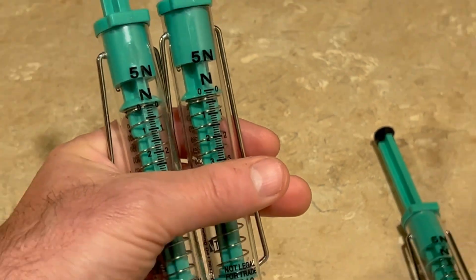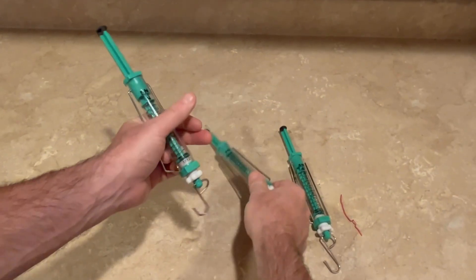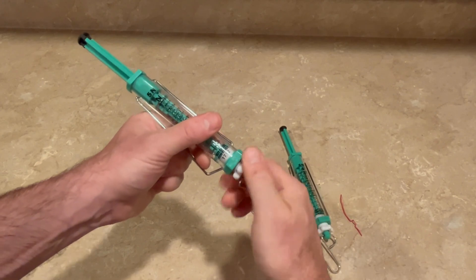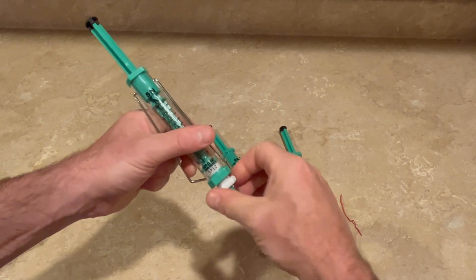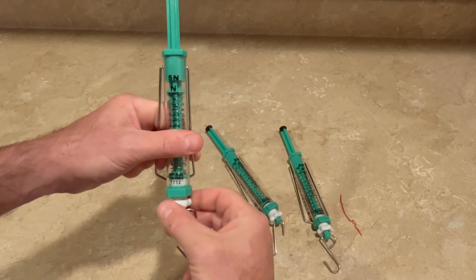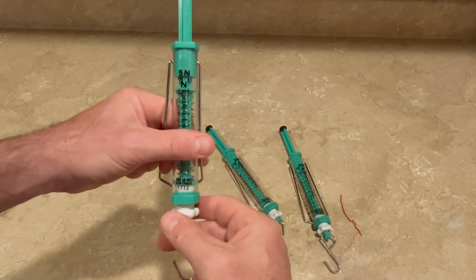Let's take one of the spring scales and adjust it to zero it. Turn the knob one direction or the other to raise or lower the edge of that green plunger until it is lined up at the zero mark.